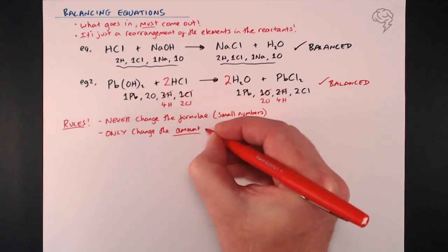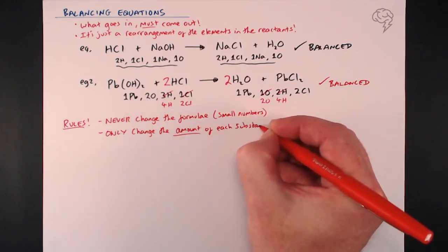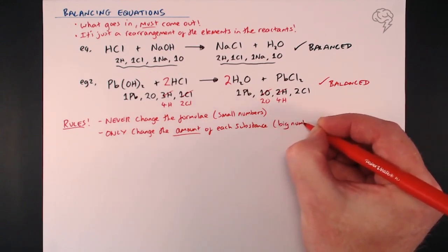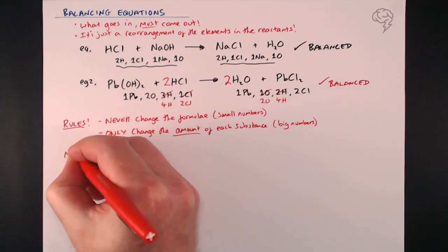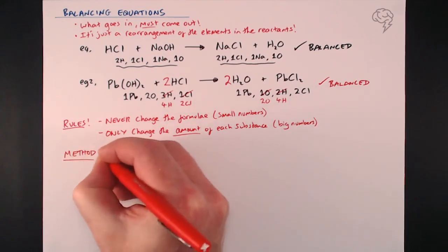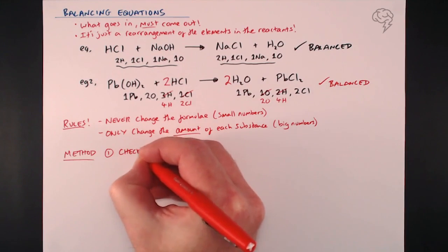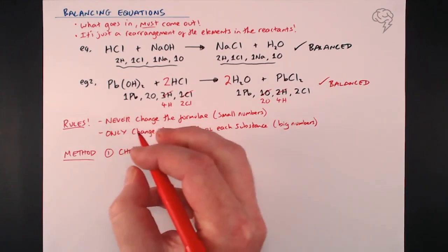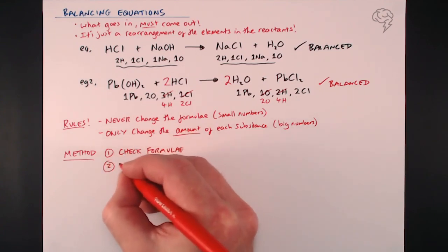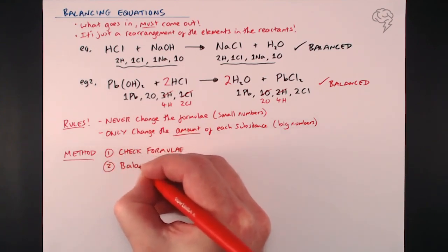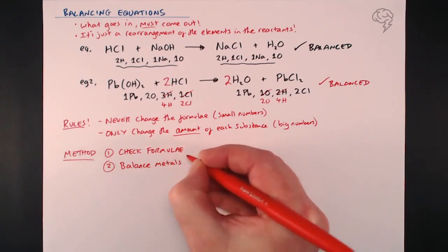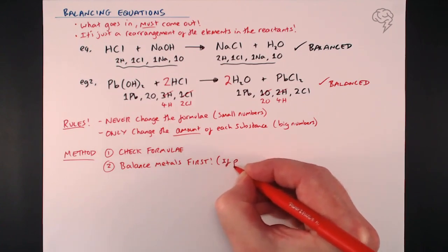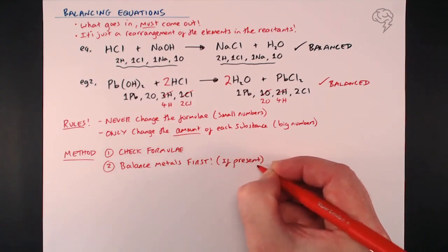In terms of a method, if I could write a method down, it would be this: when you're doing this, check that your formulae are correct. First thing, check your formulae - if your formulae are wrong, you're going to find it almost impossible, if not impossible, to balance your equation. Secondly, go ahead and balance your metals first, because they are probably the most important part if they are present. Look for your metals first and do that, and the rest should sort itself out.